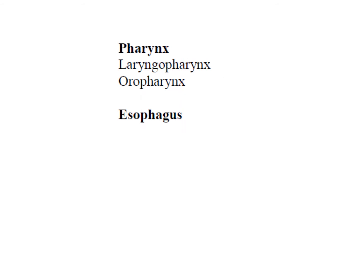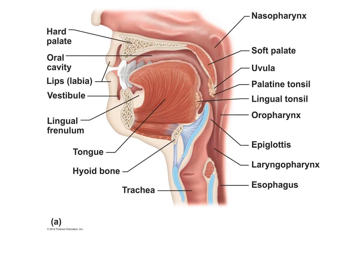Let's now turn our attention to the pharynx and esophagus. The pharynx is a long tube that runs from the posterior end of your nasal cavity all the way down to the opening to the larynx — where your voice box is located, this would be your Adam's apple. Another name for pharynx is throat.